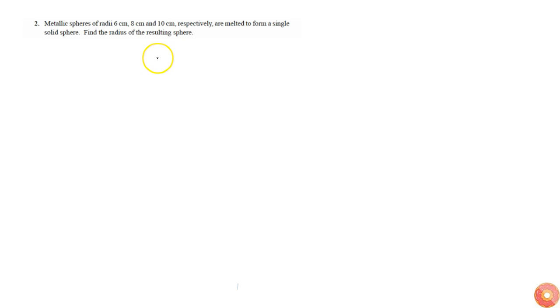In this question, three metallic spheres are given. One has a radius of 6 centimeters, another has a radius of 8 centimeters, and the third one has a radius of 10 centimeters. These three are combined, so they are melted and combined to form a single big sphere.